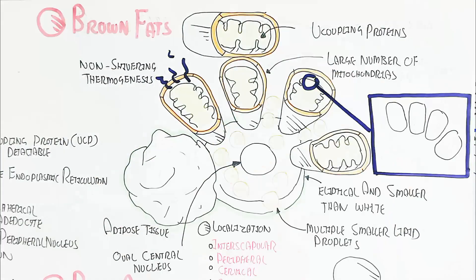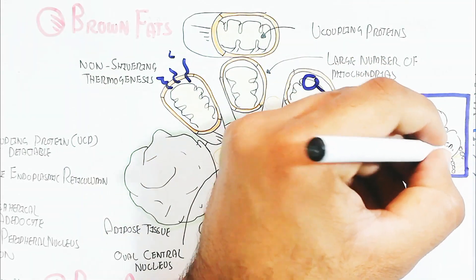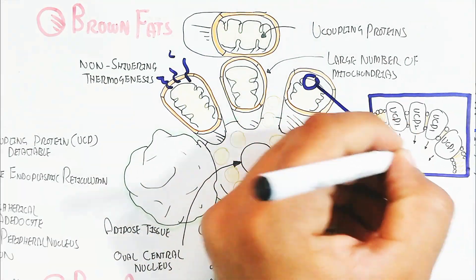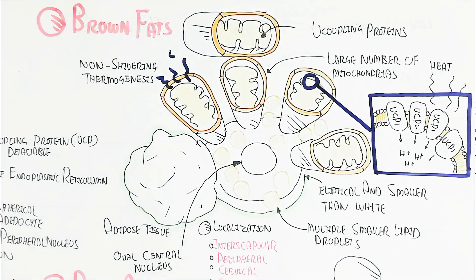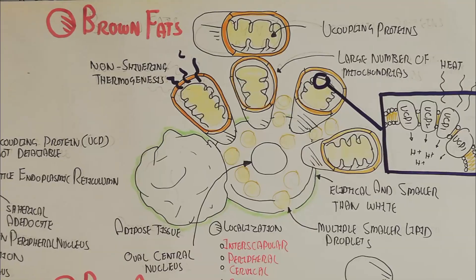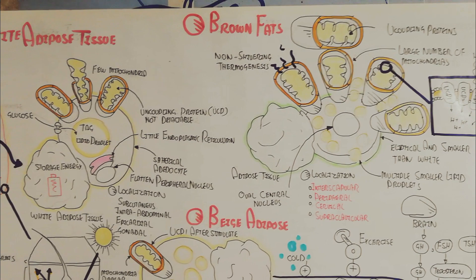Non-shivering thermogenesis will produce energy. Like the inner mitochondrial membrane contains UCP. The proton will move inside leading to production, dissipating heat. This heat leads to protect our body and our vital organs during cold weather.